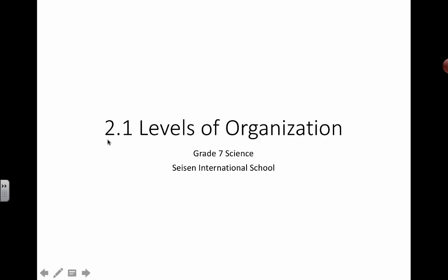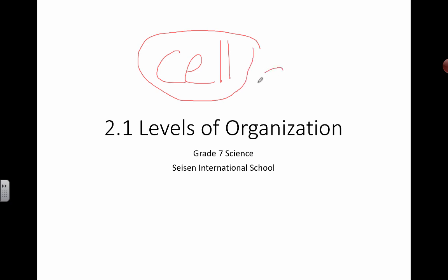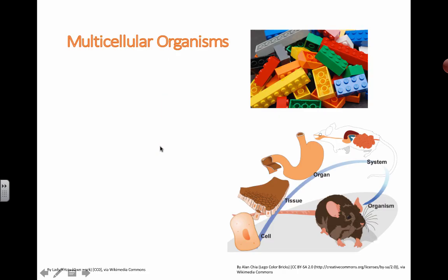We're going to start with this first unit about levels of organization. You should remember what a cell is — we learned about cells before, talking about them as the smallest units of living things. Today we're going to talk about how different cells can join up together and start to do bigger jobs, and we can organize these cells in different ways. We'll see all these levels coming up in a little bit.